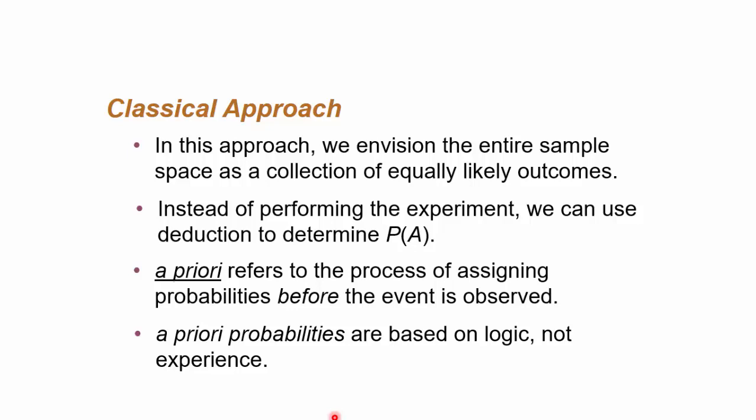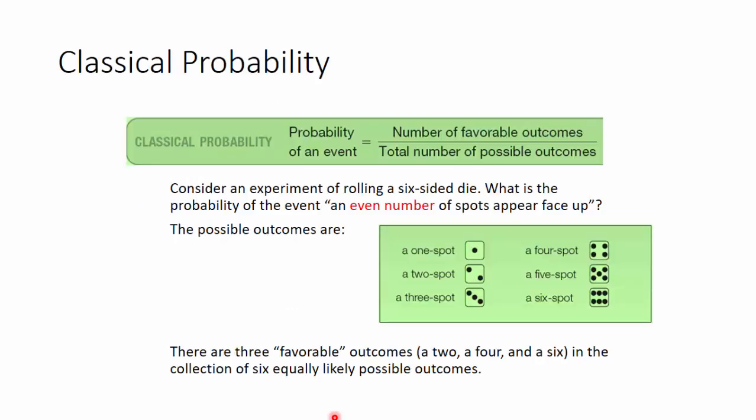A simple example would be about understanding the die. You know that the die has six sides, and you know that the probability of each could be estimated even before performing the experiment.